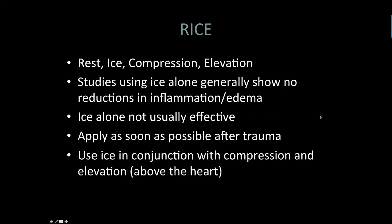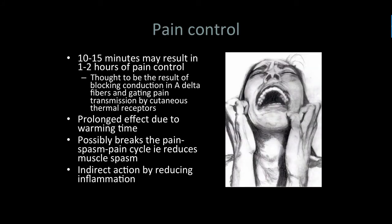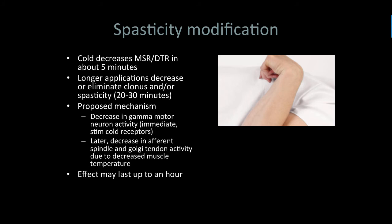We get pain control with ice — short applications of ice can give upwards of one to two hours of pain control. This is thought to block conduction of A-delta fibers and gate pain transmission. We get that prolonged effect because of the time it takes for those tissues to warm up, breaking into that pain-spasm cycle. We might also be able to reduce inflammation if it's out of control in a particular patient. We can make changes with spasticity for short periods of time, and you might get an effect lasting an hour, allowing for more effective exercise or treatment sessions.